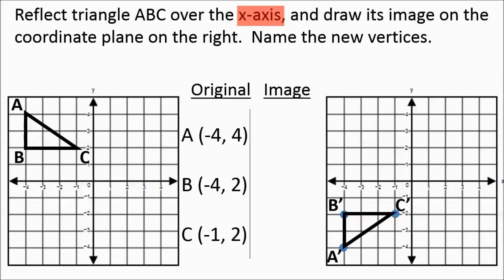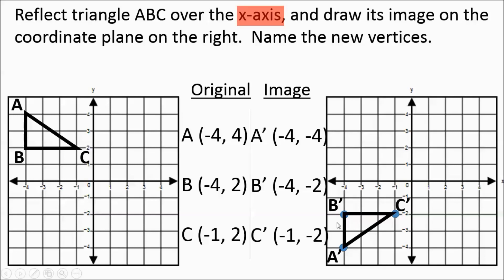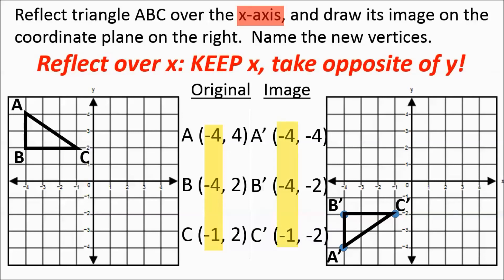We're going to name those points. A was 4 above, so the new A is 4 below. Point A is at negative 4, negative 4, and so on. This time, when reflecting over the x-axis, you keep all your x-values and just take the opposite of the y-values. When reflecting over the x-axis: keep x, take the opposite of y.